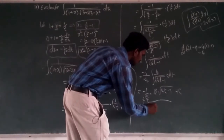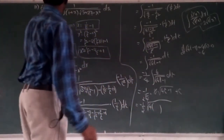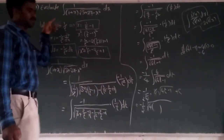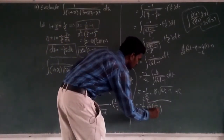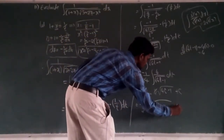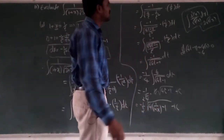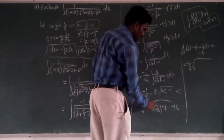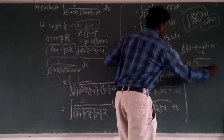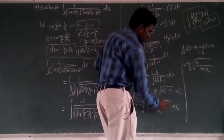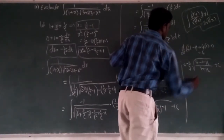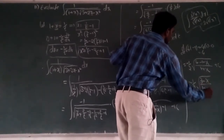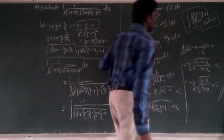Now t means what? Take reciprocal: 1 + x = 1/t means t = 1/(1 + x). So substituting: 4t = 4/(1 + x), and 4t − 1 = (4 − (1 + x))/(1 + x) = (3 − x)/(1 + x). Therefore the answer is −1/2 × √((3 − x)/(1 + x)) + C.